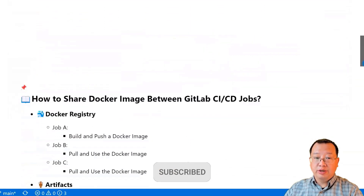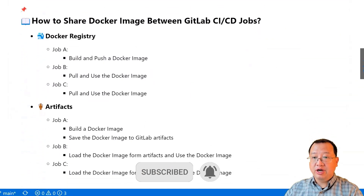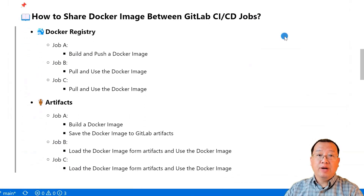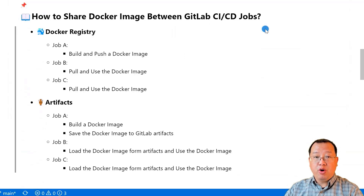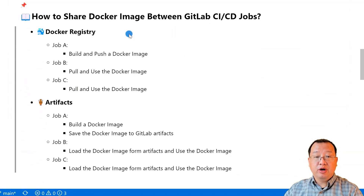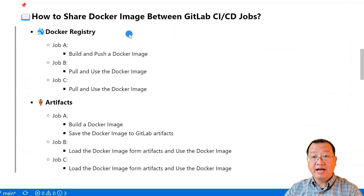So, how do I share Docker images between GitLab CI/CD jobs? There are two main ways to do it. The first is to use a Docker registry. The second is to use GitLab artifacts to store and share Docker images. The first method is useful when we need to share Docker images between different projects or teams, or when we need to deploy the Docker image to a production environment.